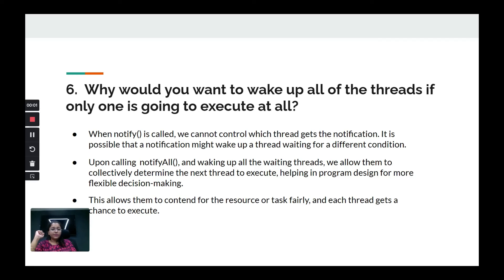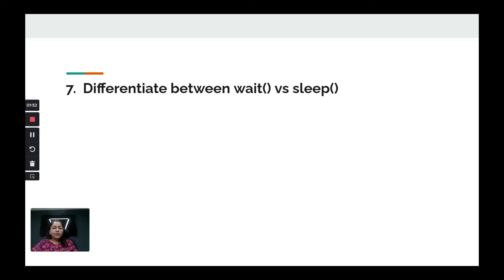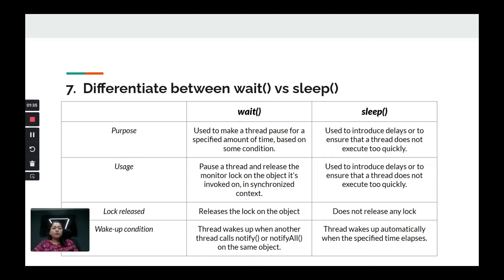The next question: what is the difference between wait and sleep? There are two key points. First, the purpose: wait is used to pause a thread pending a certain condition, while sleep is an intentional pause for a fixed duration — telling the thread to stop doing work for a specified amount of time. The intent is different even though both pause the thread.